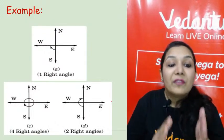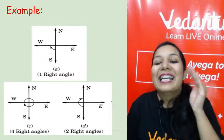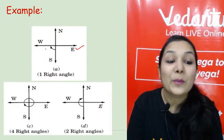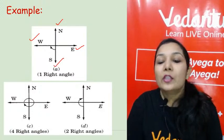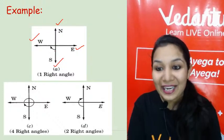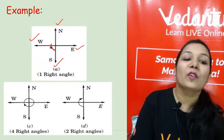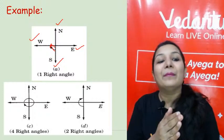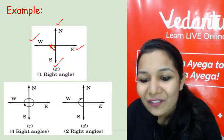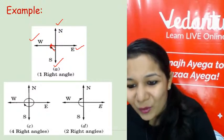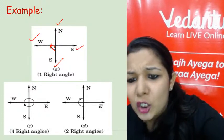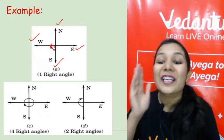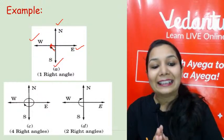Now here are some examples using directions. We always move in a clockwise direction. You all know the cardinal directions: east, west, north, south. If I am moving from south and taking a right angle, where will I reach? We will reach west — that is one right angle turn from south.